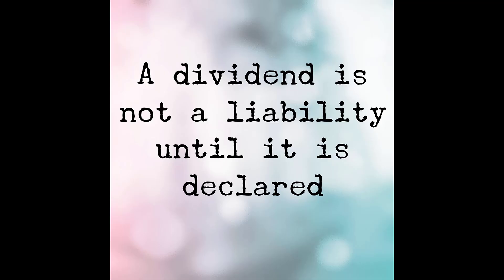Remember that a dividend is not a liability until it is declared by the Board of Directors. A company may have paid dividends every quarter for 100 years, but it does not have a liability to pay a dividend until its Board of Directors actually declares it. For example, Target has paid a dividend every quarter since October 1967 when the company became publicly held, but it has never had a liability until its Board declares the dividend.